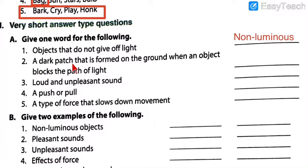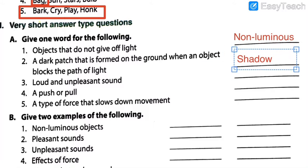Number 2: a dark patch that is formed on the ground when an object blocks the path of light. The correct answer is shadow. Shadow is formed when an object blocks the path of light, and that is why on the opposite side of the light, shadow is formed. Please check your answers carefully - in the exam, incorrect spelling can cost you a mark, especially for a one-word answer.